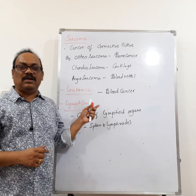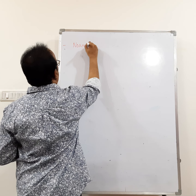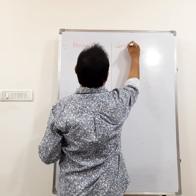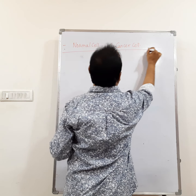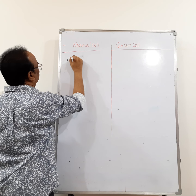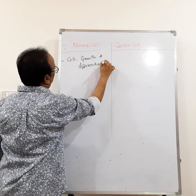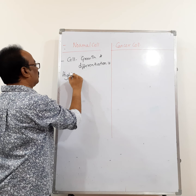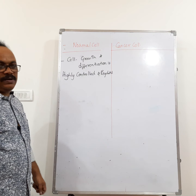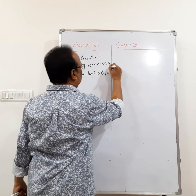Now let us see the differences between the normal cell and the cancer cell. In normal cells, cell growth, cell division, and differentiation are highly controlled and regulated. In cancer cells, this control and regulation is completely absent.